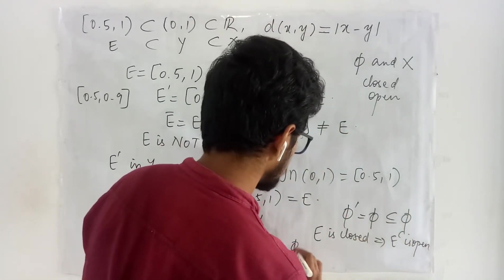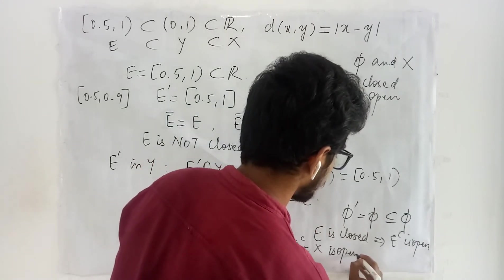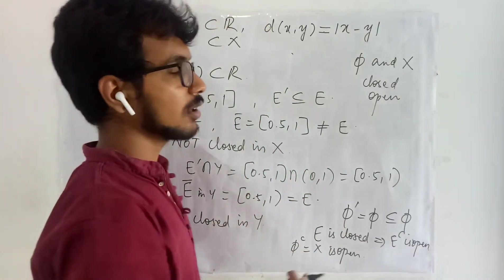So empty set is closed implies empty set complement which is going to be the entire X is open.